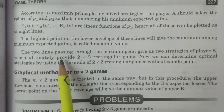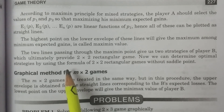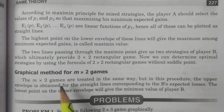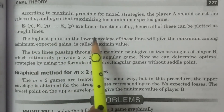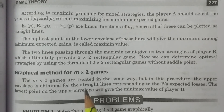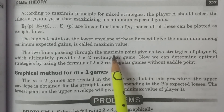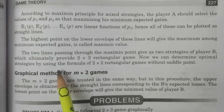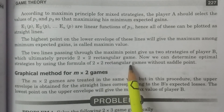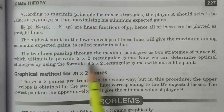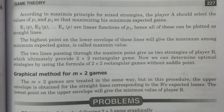The two lines that intersect at the highest point on the lower envelope give us Player B's optimal strategies. The two particular lines intersecting at the maximin point correspond to two strategies of Player B, ultimately reducing the 2×n game to a 2×2 rectangular game, since Player A always has two strategies and Player B's n strategies are now reduced to two.